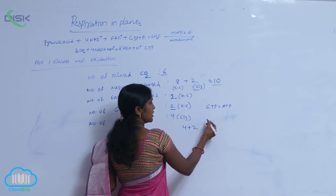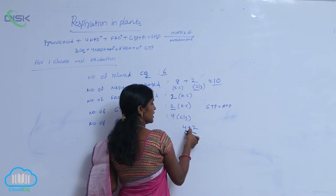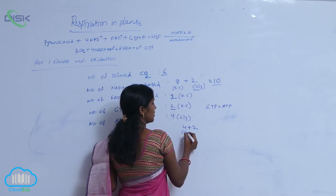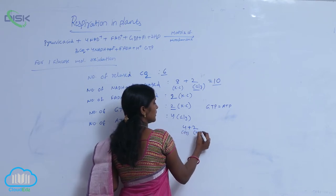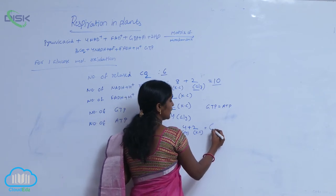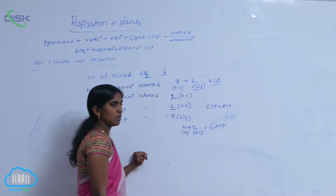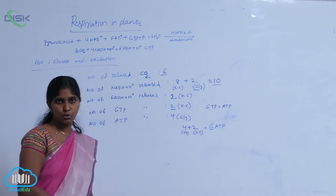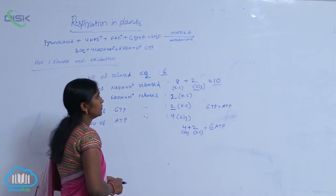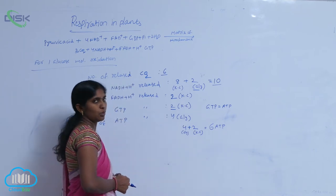2 are GTP's, these are equivalent to ATP's. That's why 2 are from glycolysis, 2 are from Krebs cycle. Totally, 6 ATP's are released during the oxidation of one glucose molecule.